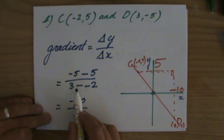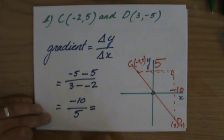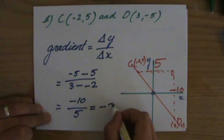Minus five minus five is minus ten divided by three minus minus two, which is five. Because that turns into a positive. Minus ten divided by five is minus two.